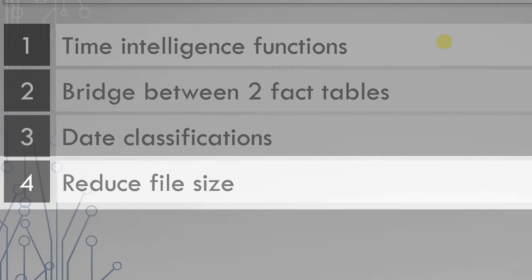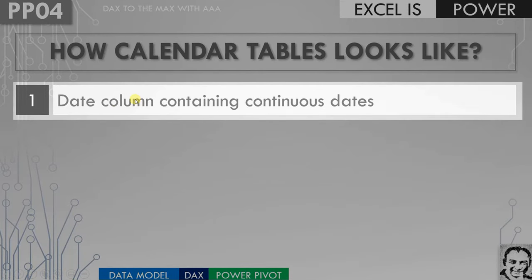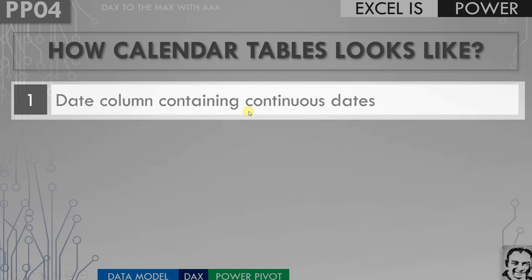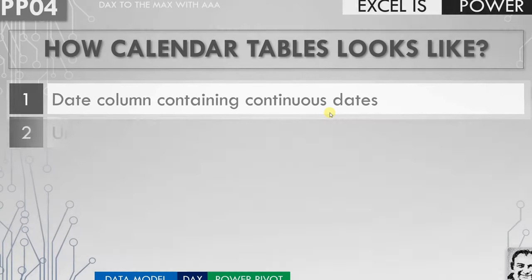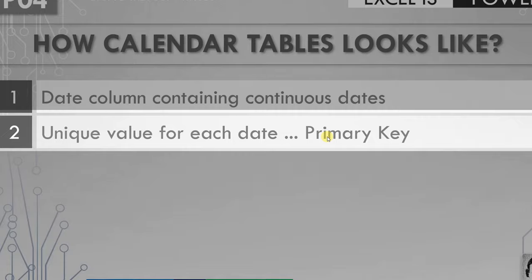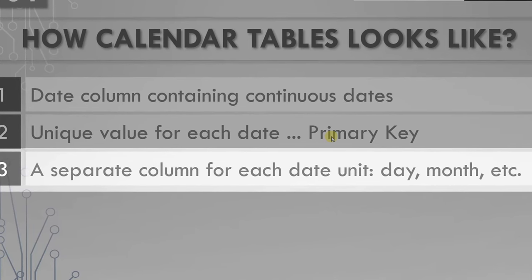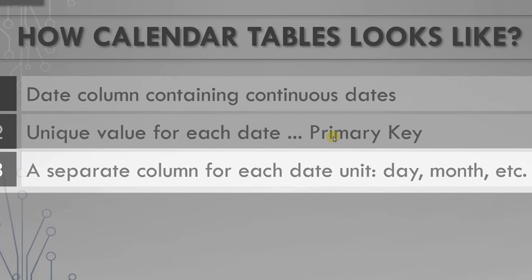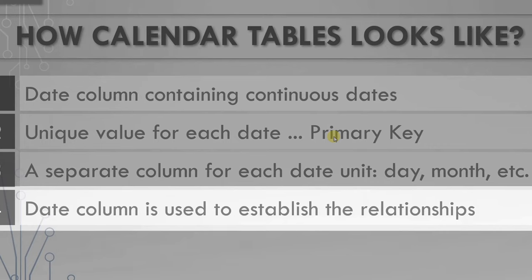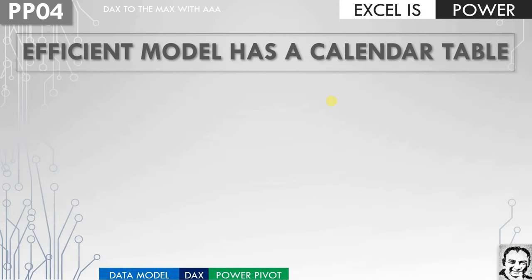Now let's understand what calendar tables look like. You must have a date column containing continuous dates with no missing values, and each date must be unique — giving you a primary key. You need a separate column for each date unit: day of the week, month, year, quarter, and so on. Finally, the date column in your calendar table will be used to establish relationships between the other tables inside your data model. An efficient model has a calendar table.